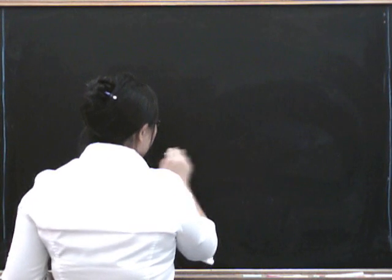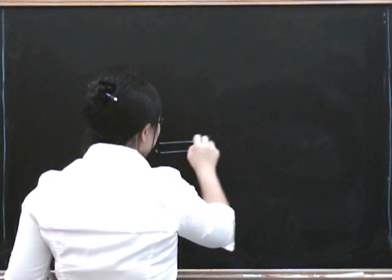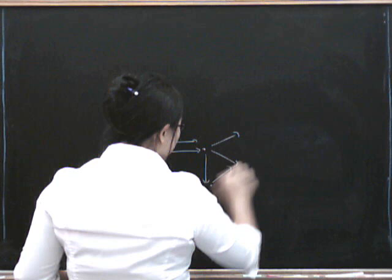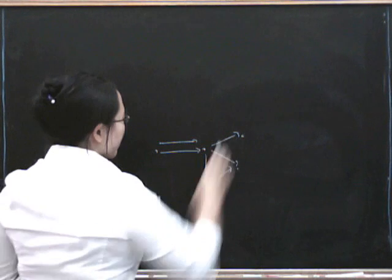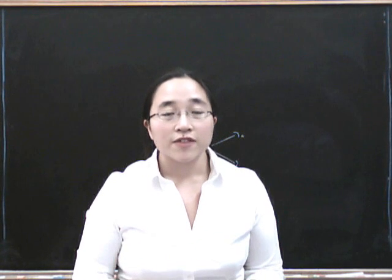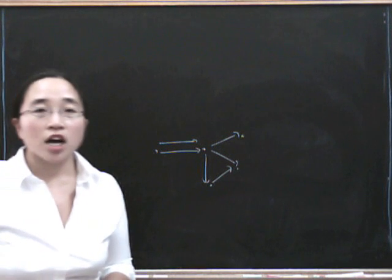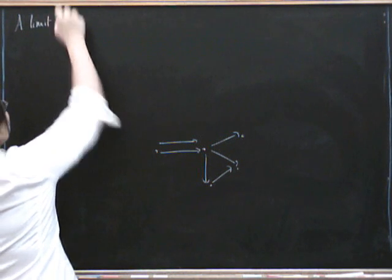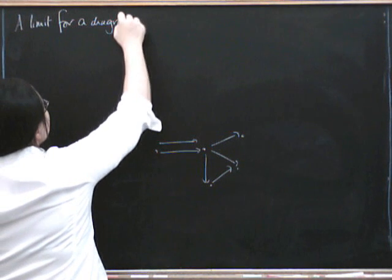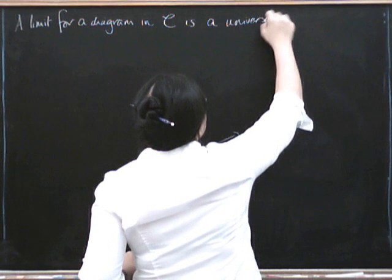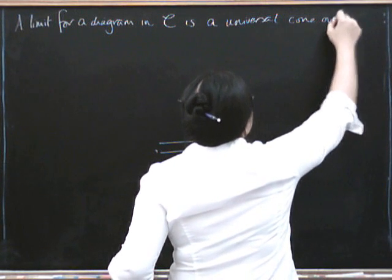We can take any diagram. Here is a diagram — we have some objects, and we have some morphisms. The slogan to remember is that a limit for this diagram is a universal cone. The limit for a diagram in C is a universal cone over the diagram.